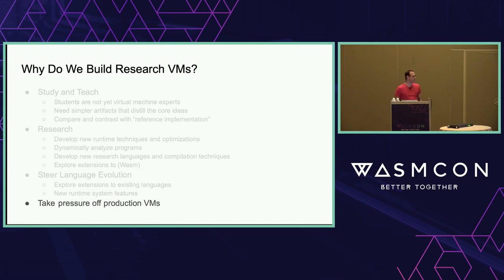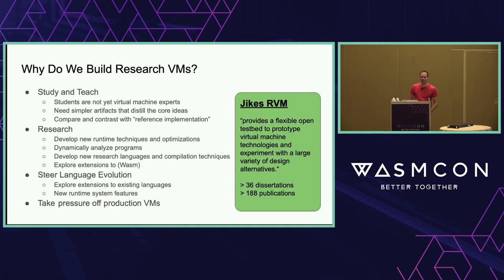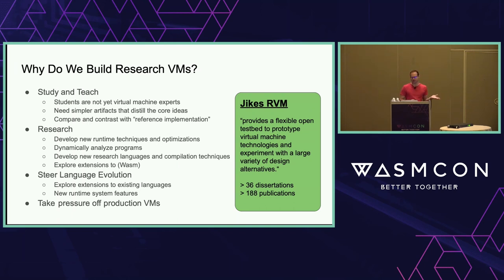I think it's good to take pressure off production VMs. I worked on a production VM that is 900,000 lines of code, primarily oriented toward performance. If it also has to serve as a research vehicle with extensibility mechanisms, it's serving two masters. A good historical example is Jikes RVM, which came out around 2000 — a Java VM written in Java, designed for research. Its tagline was that it provides a flexible open test bed to prototype VM technologies and experiment with a large variety of design alternatives. Many papers were published, and still are. That's the space Wizard is in: flexibility and experimentation.